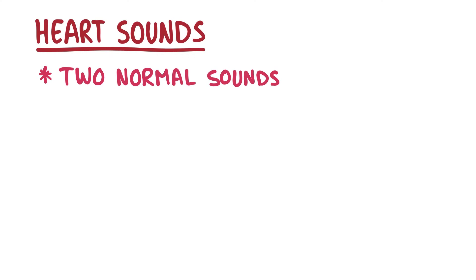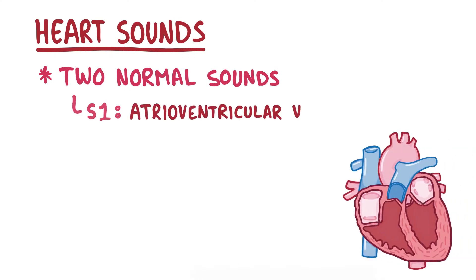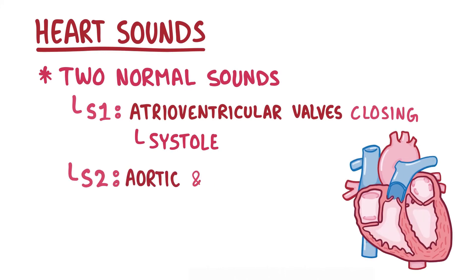Alright, as a quick recap. Heart sounds are generated as blood flows through the beating heart. There are two normal heart sounds, S1 caused by the atrial ventricular valves closing at the beginning of systole, and S2 caused by the aortic and pulmonary valves closing at the beginning of diastole.